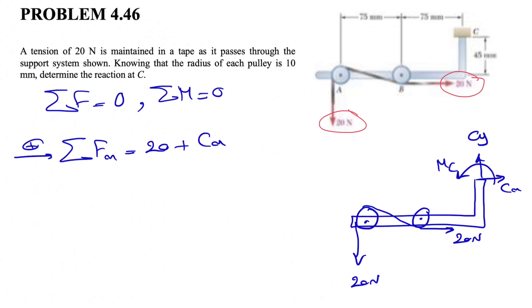That's pretty much everything in X direction, which shows CX is minus 20 Newton. The negative sign shows that the direction that we considered is not the correct assumption, so it has to be to the left. So that would be the answer for one of the unknowns for the X reaction at C.